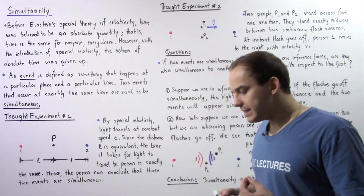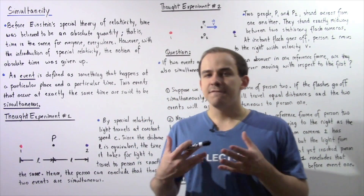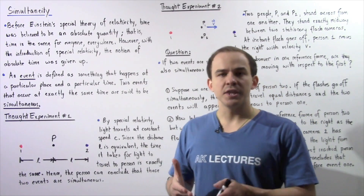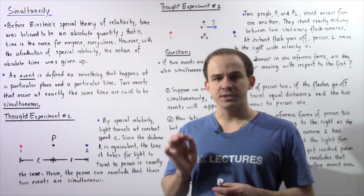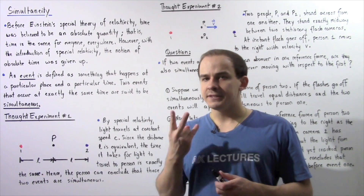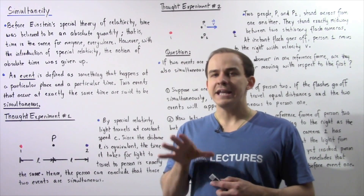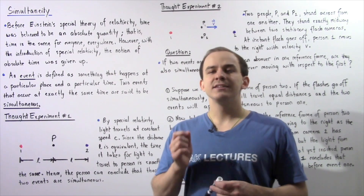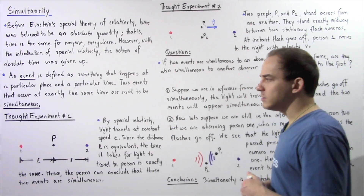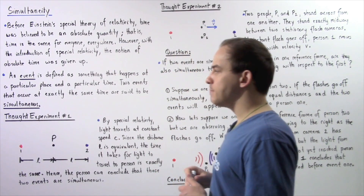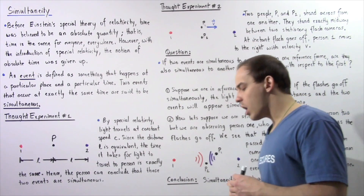Let's begin by defining what we mean by an event. An event is defined as something that happens at a particular place and at a particular time. Two different events are said to occur simultaneously if they take place at the same exact time. So let's begin by looking at thought experiment number one.